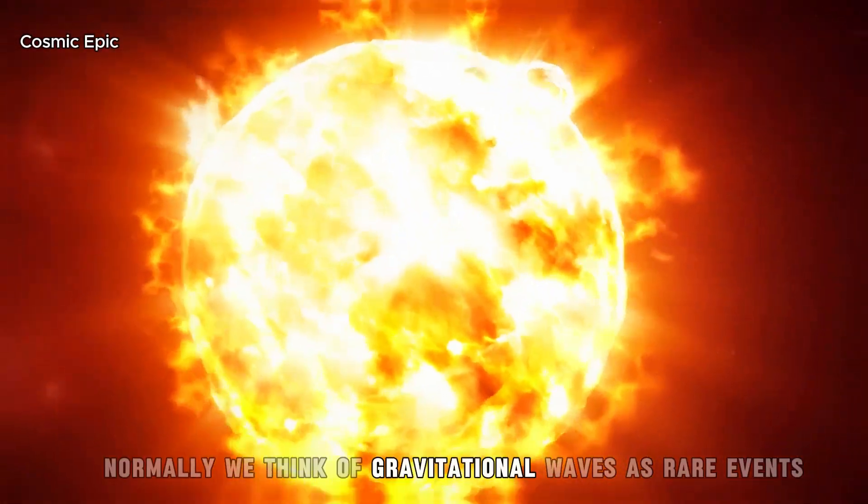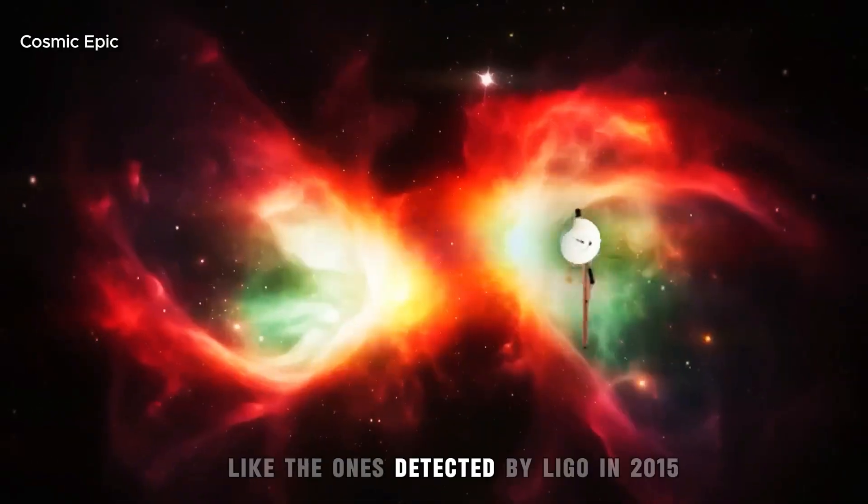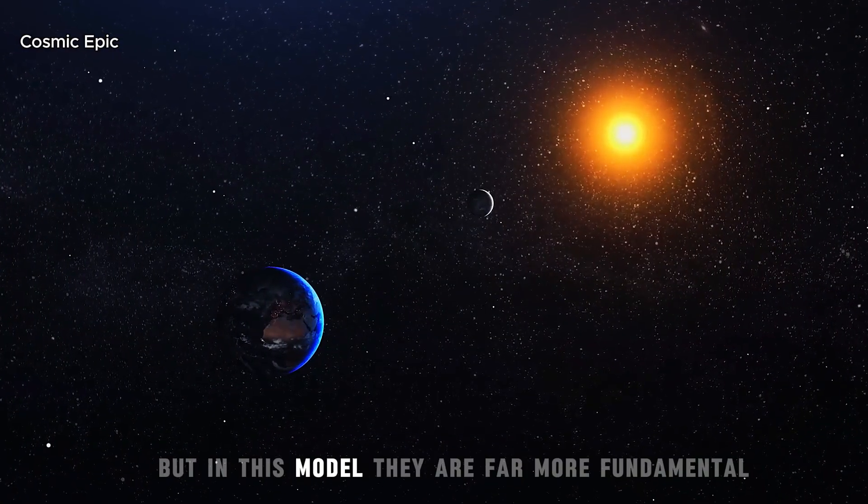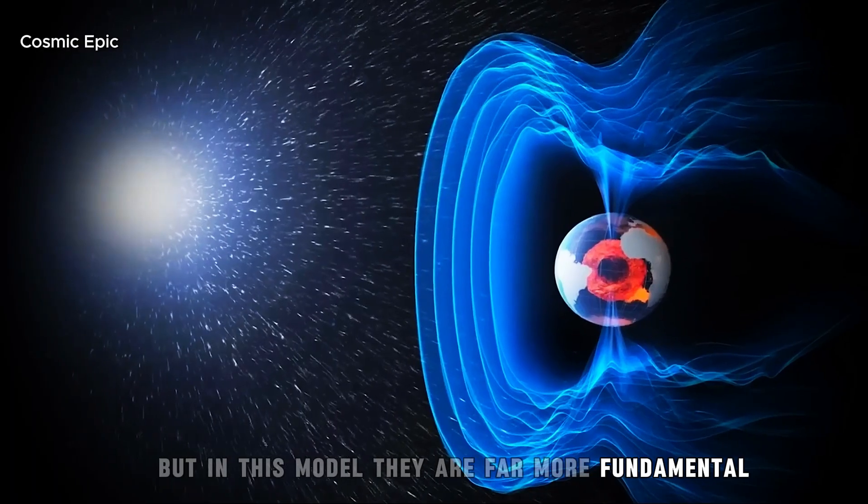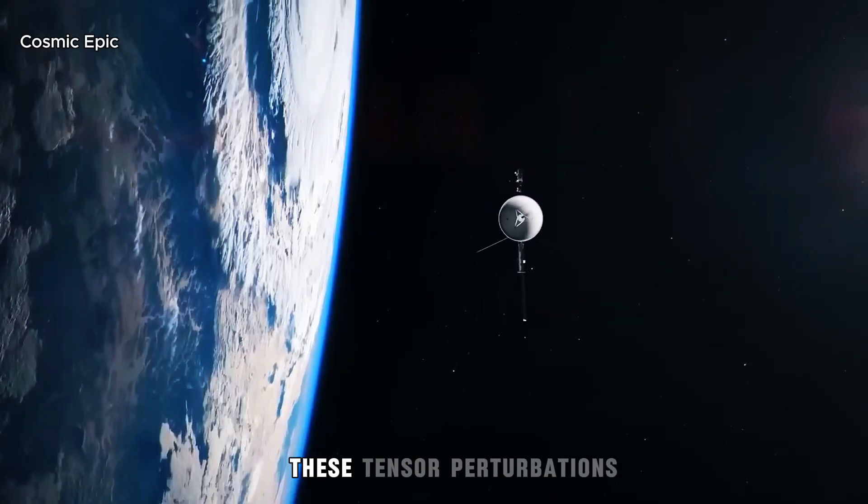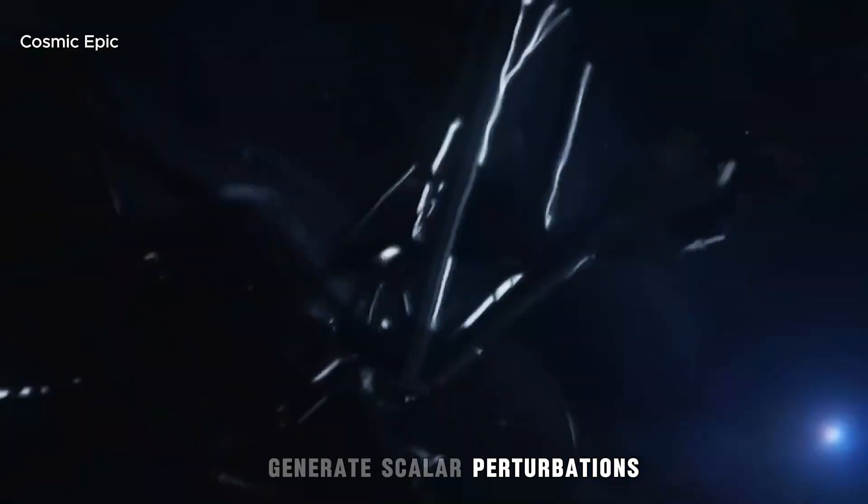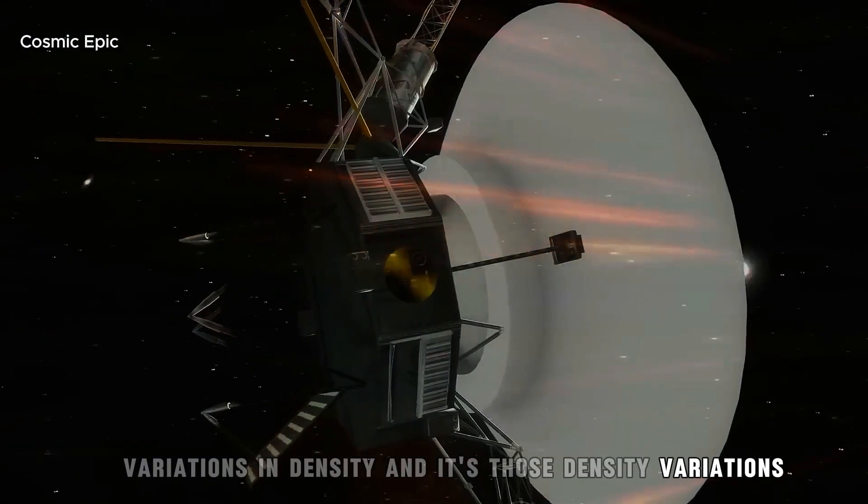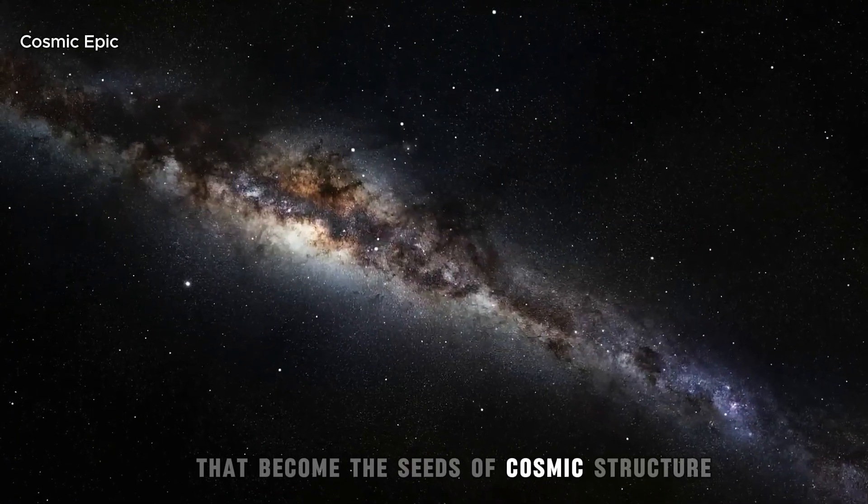Normally, we think of gravitational waves as rare events like the ones detected by LIGO in 2015 from colliding black holes. But in this model, they are far more fundamental. When the mathematics is extended to second order, these tensor perturbations generate scalar perturbations—variations in density. And it's those density variations that become the seeds of cosmic structure.